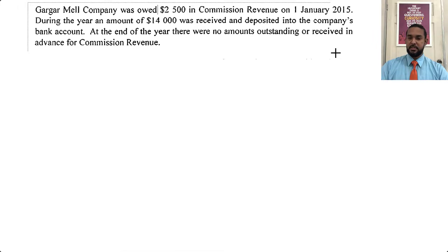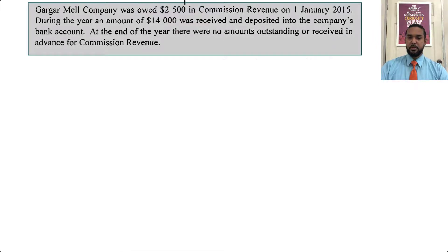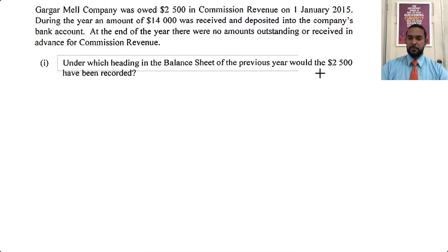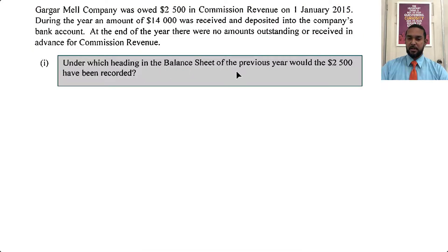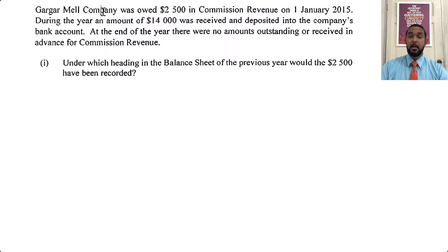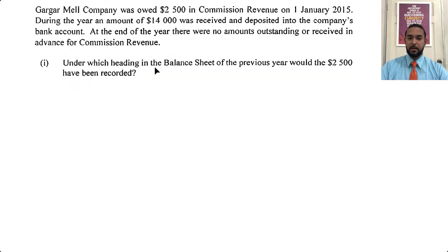Gargamel Company was owed $2,500 in commission revenue on 1 Jan 2015. During the year, $14,000 was received and deposited into the company's bank account. At the end of the year, there were no amounts outstanding or received in advance for commission revenue. The first question asks under which heading in the balance sheet of the previous year would the $2,500 have been recorded. Since the $2,500 was commission owed to Gargamel, if we are owed revenue, that's a current asset — it's a receivable. So under current assets.